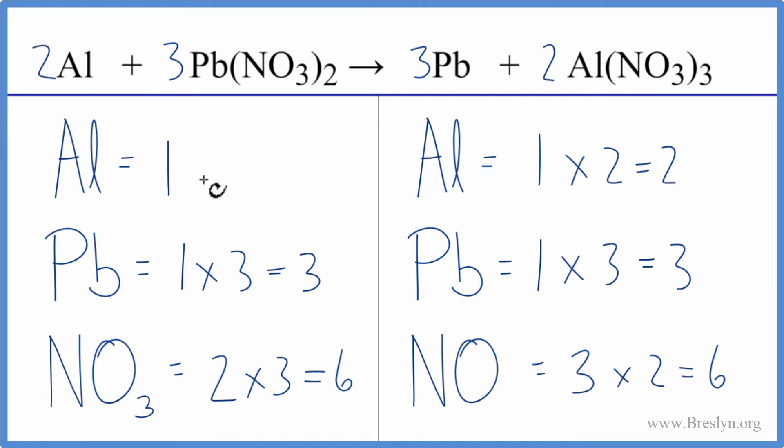So one times the two, and the aluminums are balanced, and we're done. This equation is balanced. So you can see when we have these single displacement reactions, we have polyatomic ions that stay together on both sides, like the nitrate ion here. If you count them as one thing, it makes the balancing a lot easier.